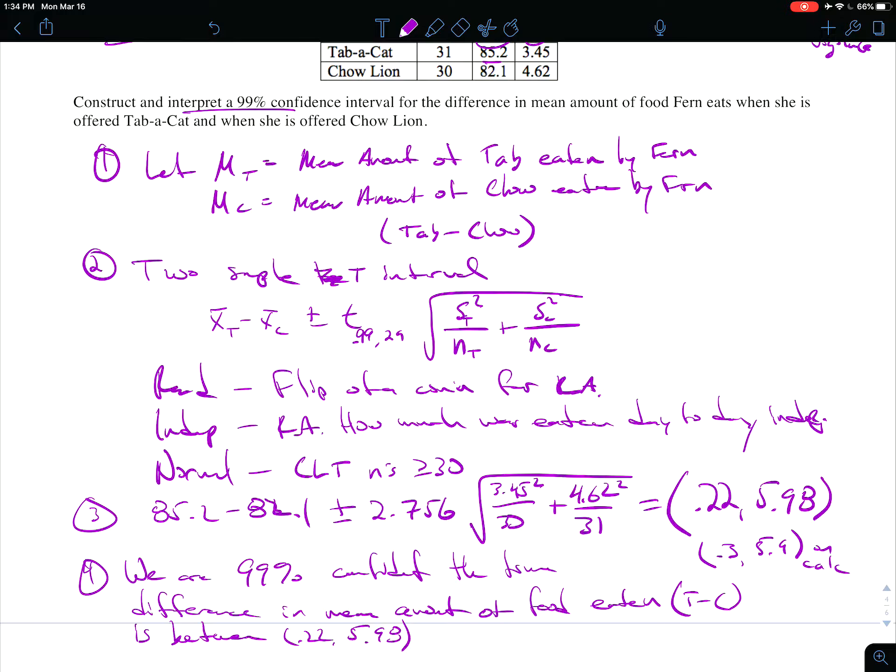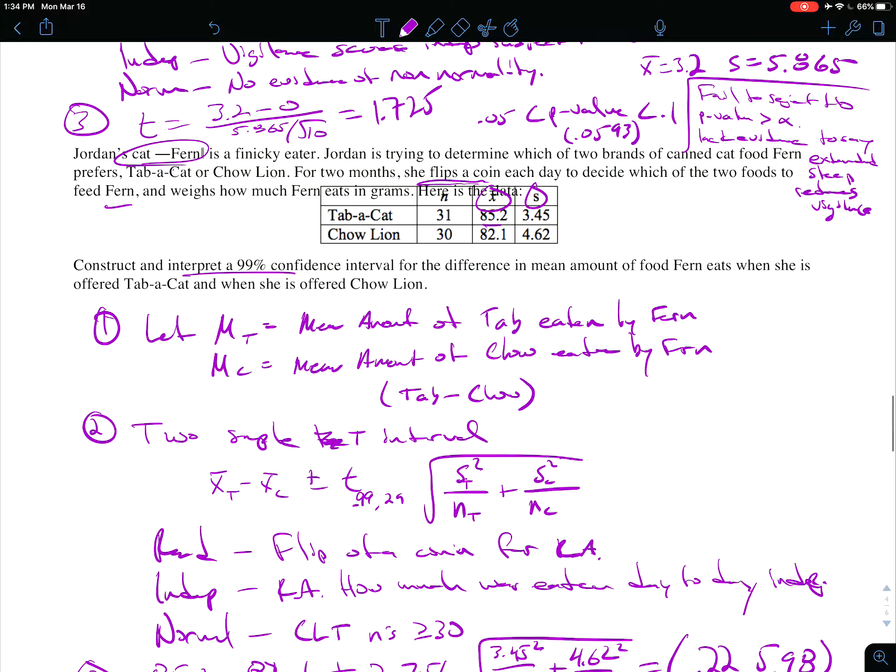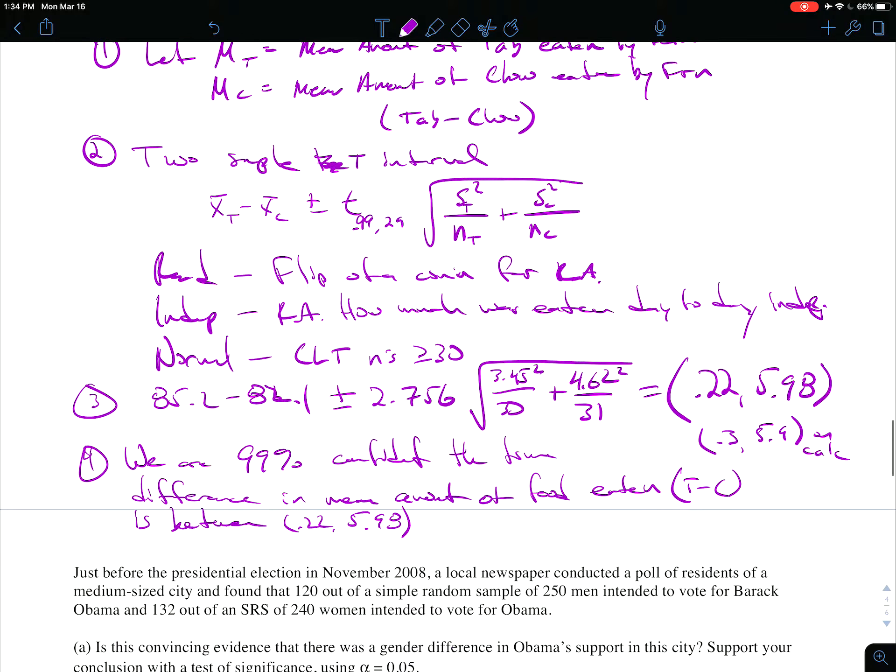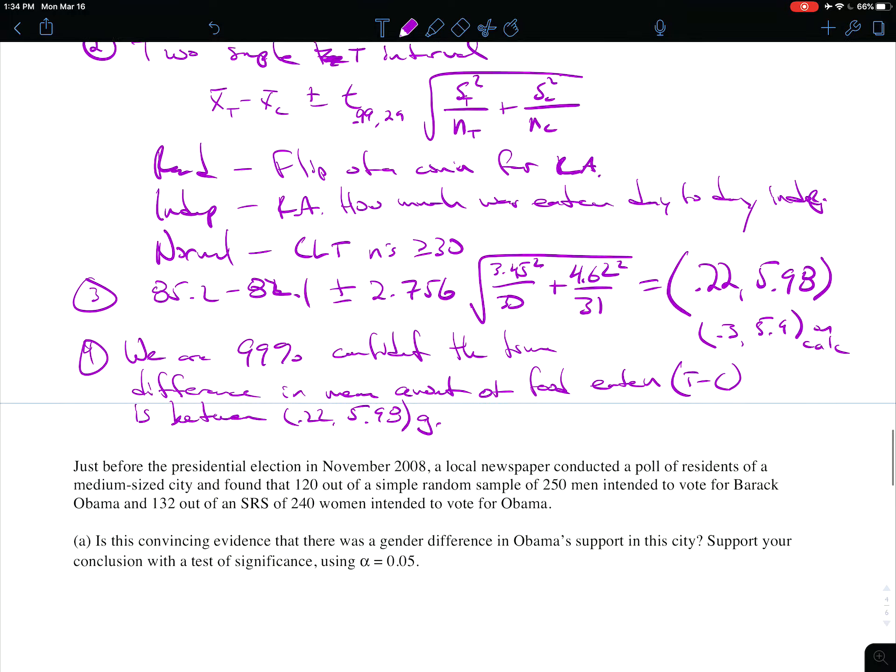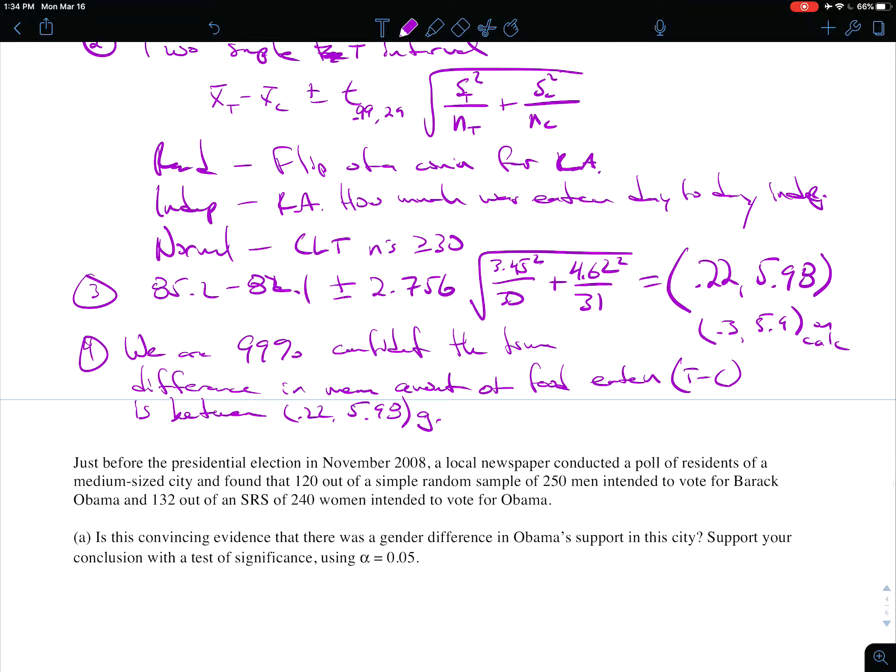And this was measured in grams. There we go. And we're done. Calculate and interpret. There was no follow-up about is it truly that they eat more of one. As it turns out, it is because zero is not in the interval, but that wasn't asked for in this particular problem.